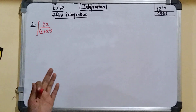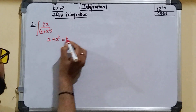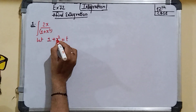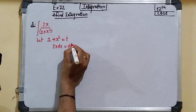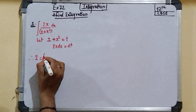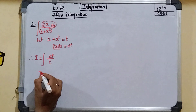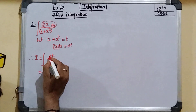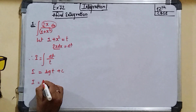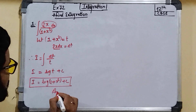To solve this, we apply the substitution method. We take 1 + x² as t. Differentiating, we get 2x dx = dt. So the integration becomes the integral of dt over t, which equals log t + c. Replacing t with (1 + x²), the answer is log(1 + x²) + c.